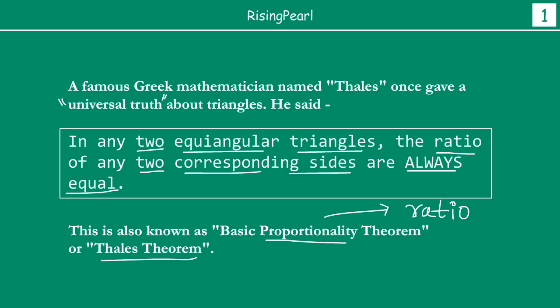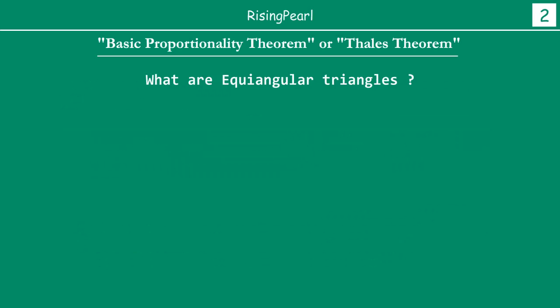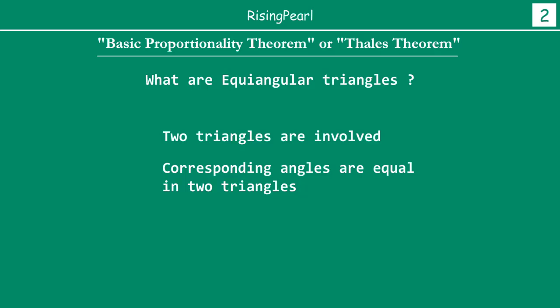In order to understand this, let's understand what we mean by equiangular triangles. First, there are two triangles involved — we are not talking about one equilateral triangle. We are talking about two triangles, and the corresponding angles in the two triangles must be equal.